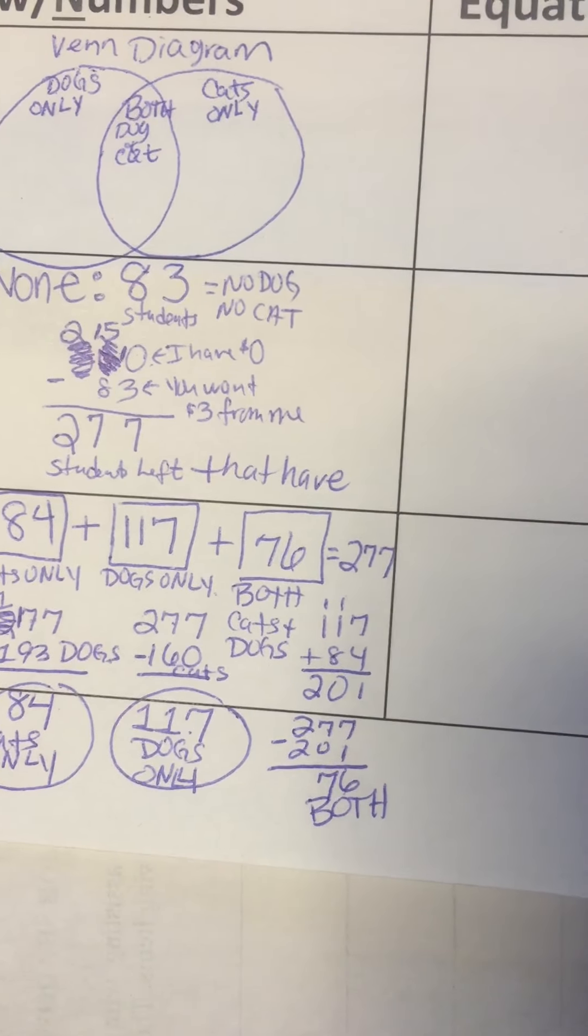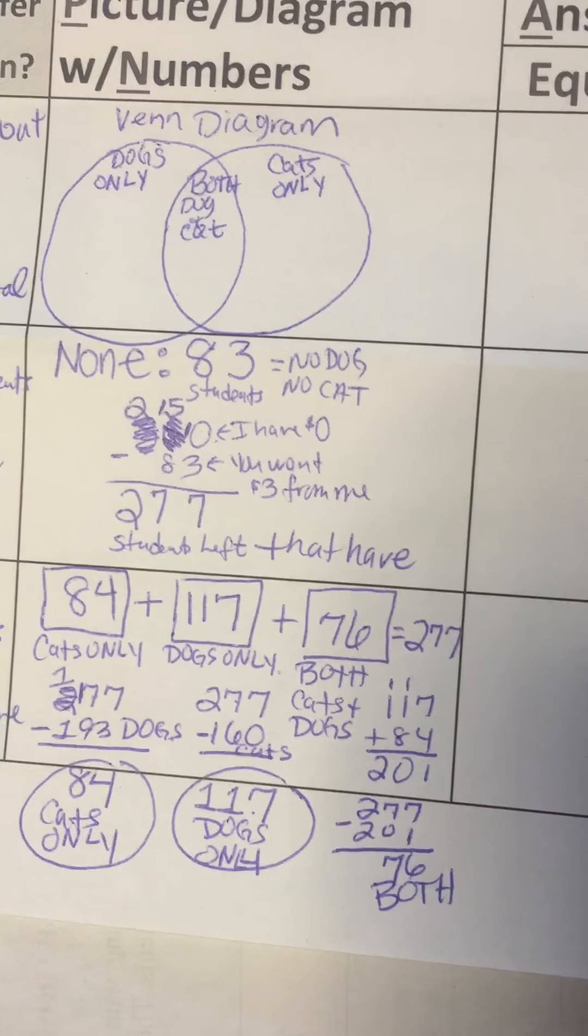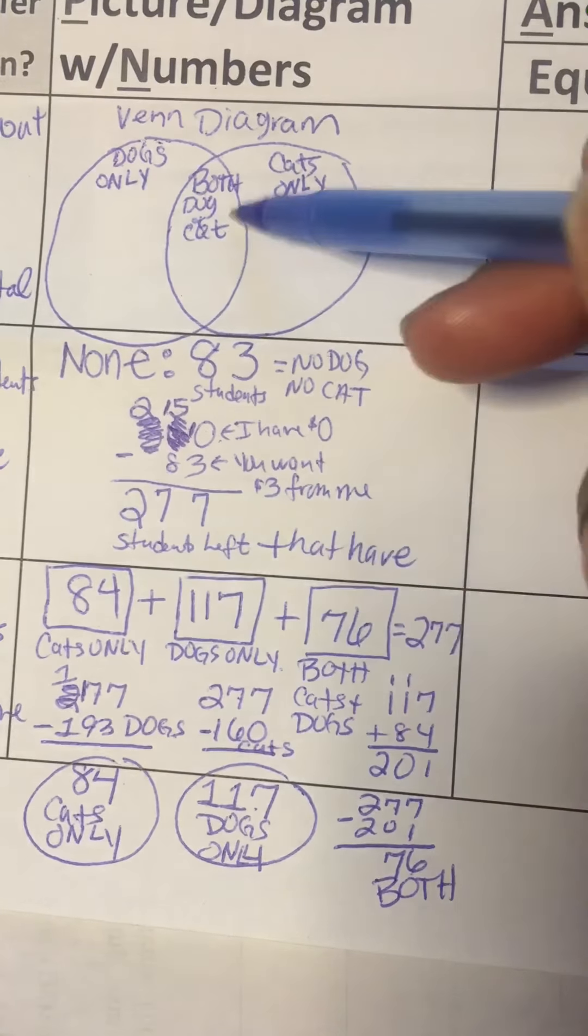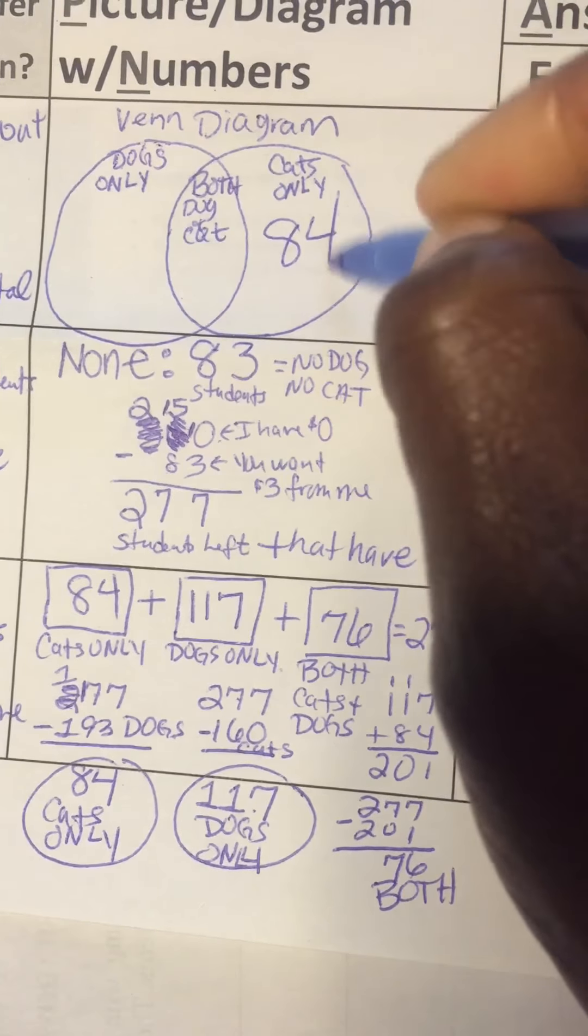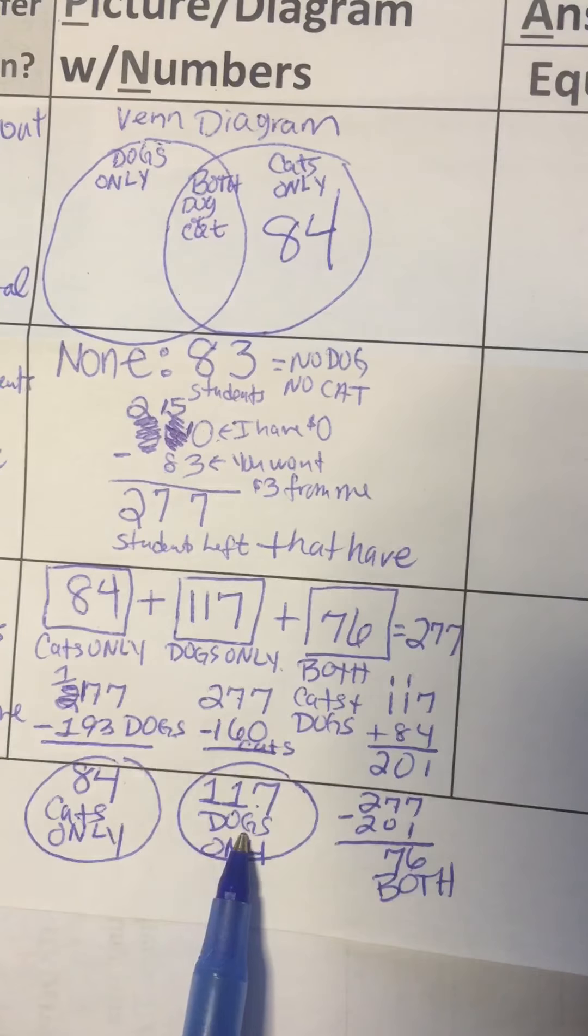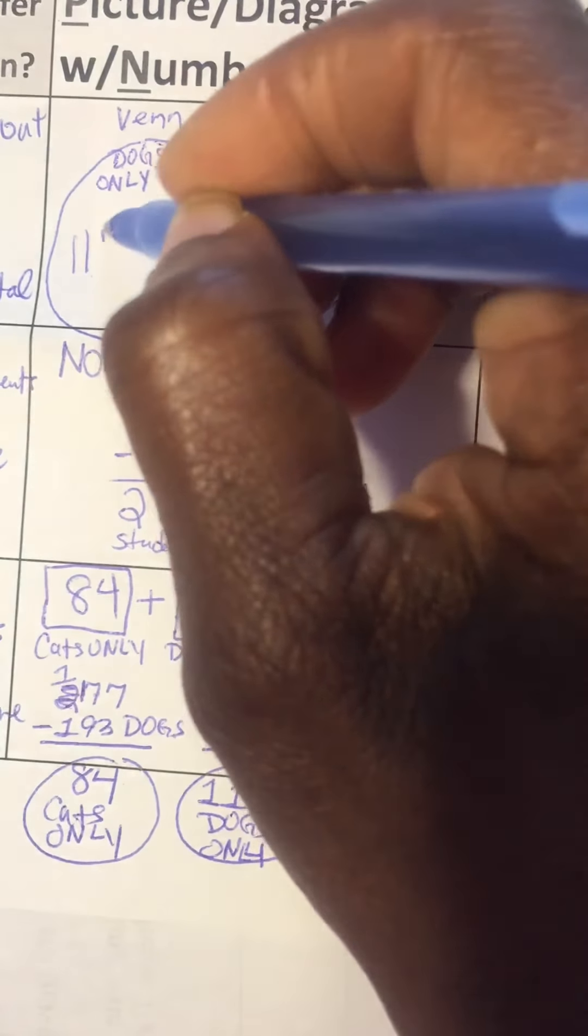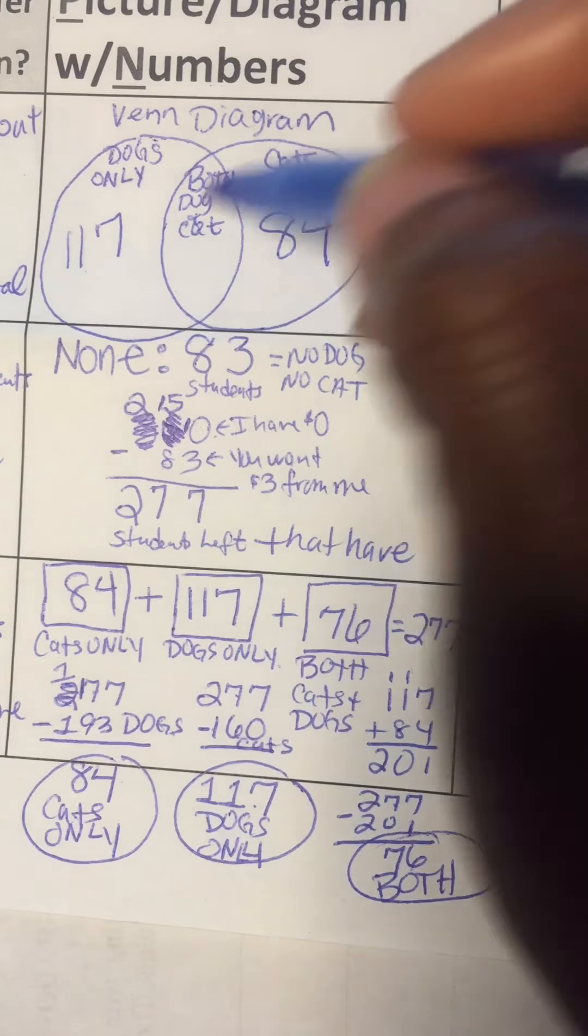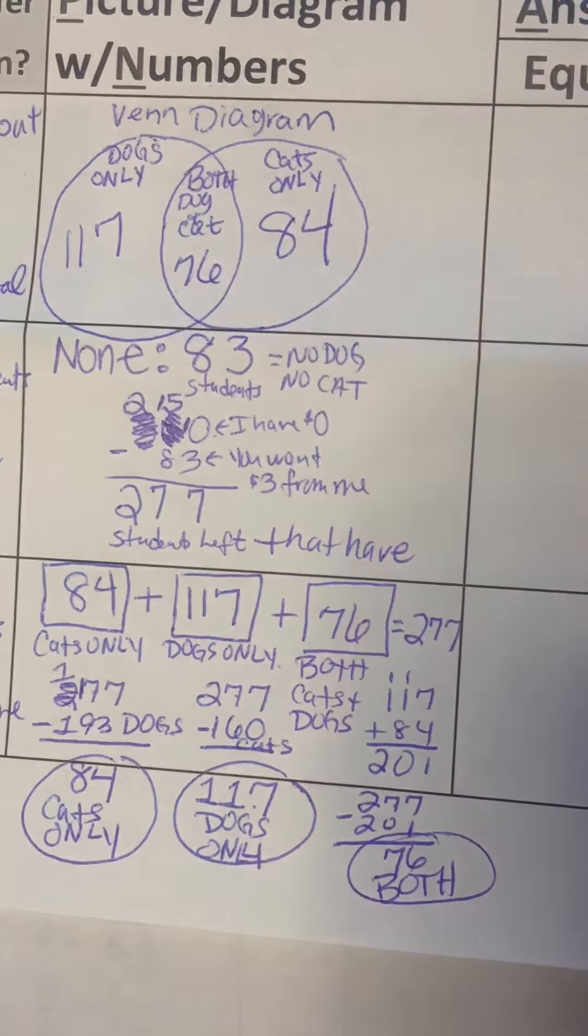And to make sure that these numbers add up correctly, I'm going to go back up here to the Venn diagram. Okay, so we said cats only, 84 had cats only, 117 had dogs only, and 76 had both cats and dogs.